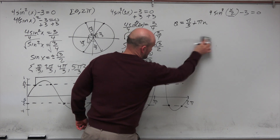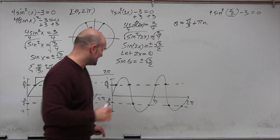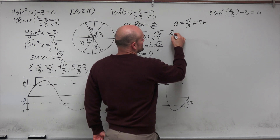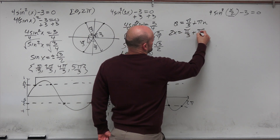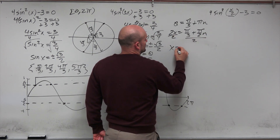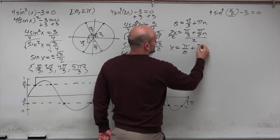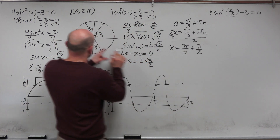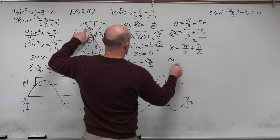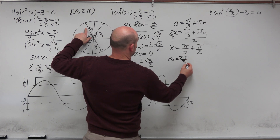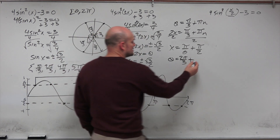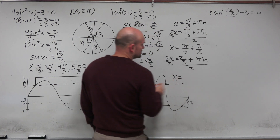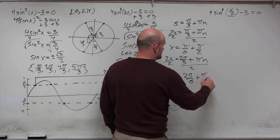Since we're actually dealing with 2x, not θ, we rewrite as: 2x equals π/3 plus πn. Dividing both sides by 2 gives x equals π/6 plus (π/2)n. Similarly, 2x equals 2π/3 plus πn becomes x equals π/3 plus (π/2)n, which is 2π/6 plus (π/2)n.